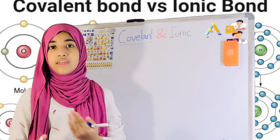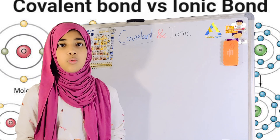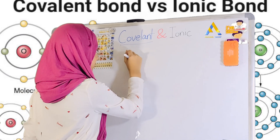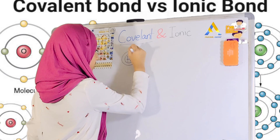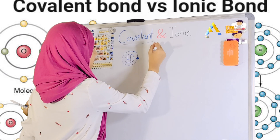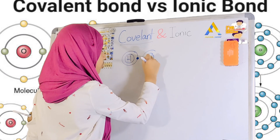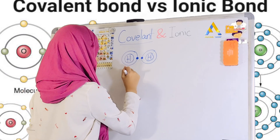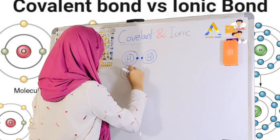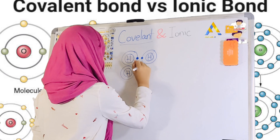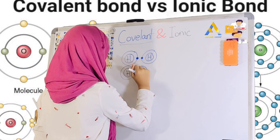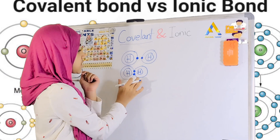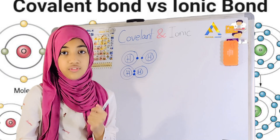Let me draw that diagram. Covalent bonds is basically when two atoms are sharing the electrons in their middle. As an example, let's say we have one hydrogen atom, and obviously it has one electron in its outer ring. It comes near another hydrogen atom, who also has one electron on their outer ring. Now, it can't give or take, so it has to share in the middle. This is how it would look like if it were a covalent bond.